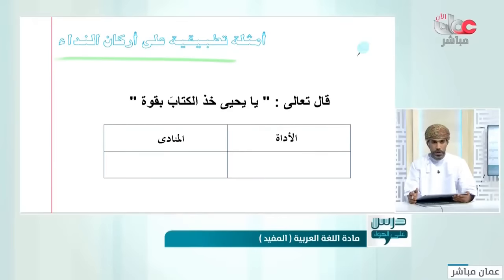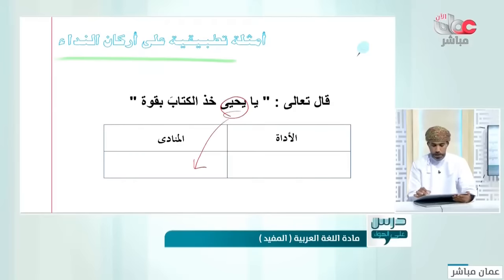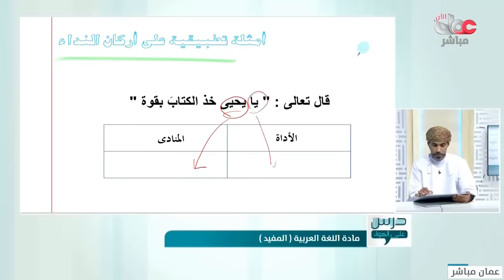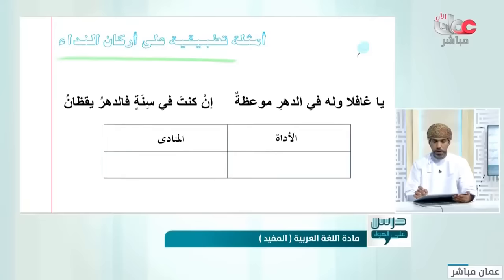تطبيق على أركان النداء: قال تعالى: يا يحيى خذ الكتاب بقوة. من المنادى؟ يحيى هو المنادى. وقع هذا النداء بأداة معينة وهي 'يا'. إذن الأداة يا والمنادى يحيى.